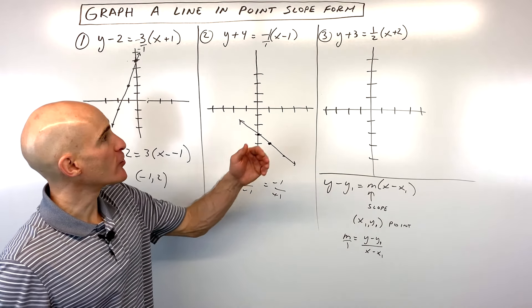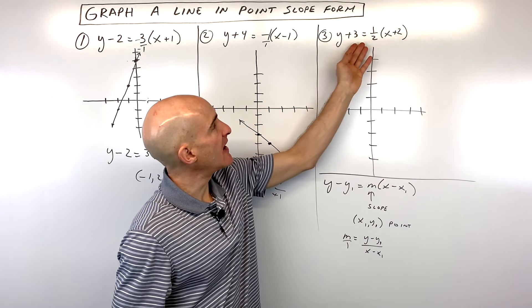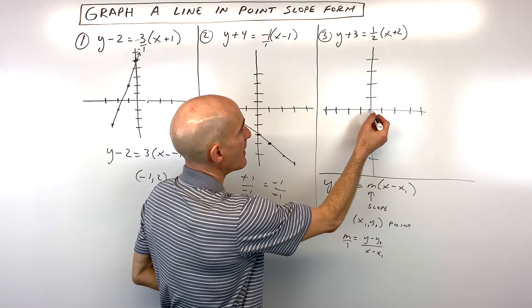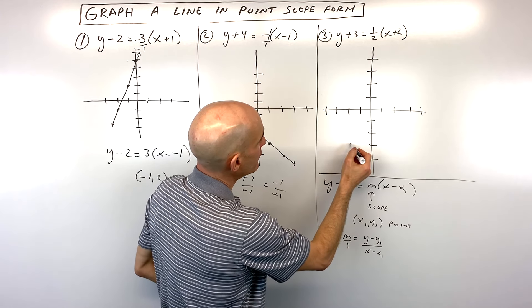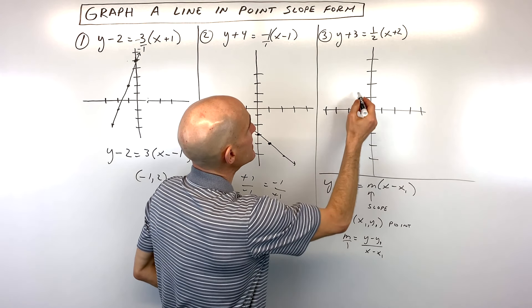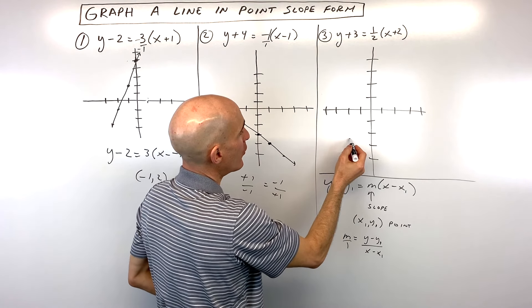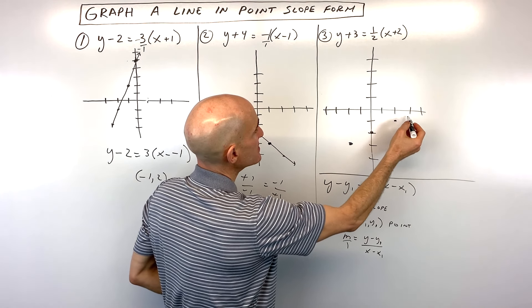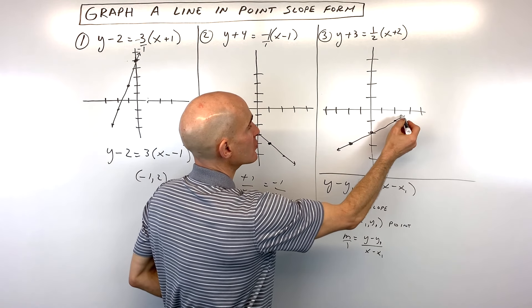Okay, last example. See if you can do this one on your own. What point does this line go through? Negative 2, negative 3. Remember, it's the opposite. Left 2, down 3, right about there. It has a slope of 1 half. So we're going to go rise 1, run 2. And you can repeat that. Rise 1, run 2, etc. And that's your line.